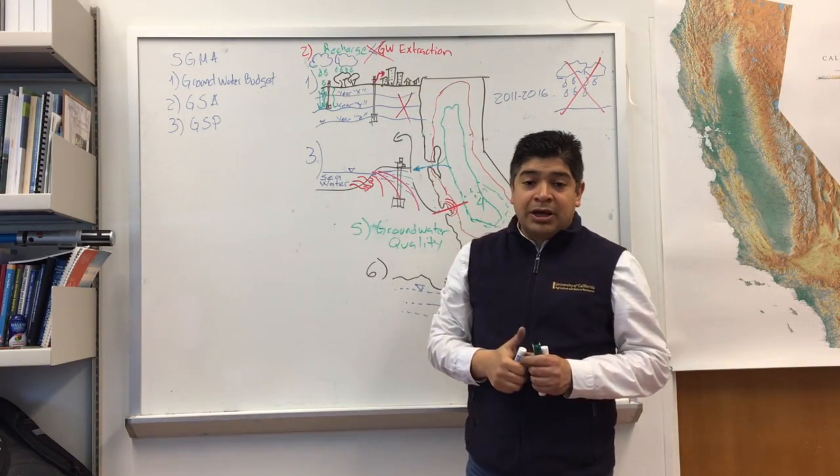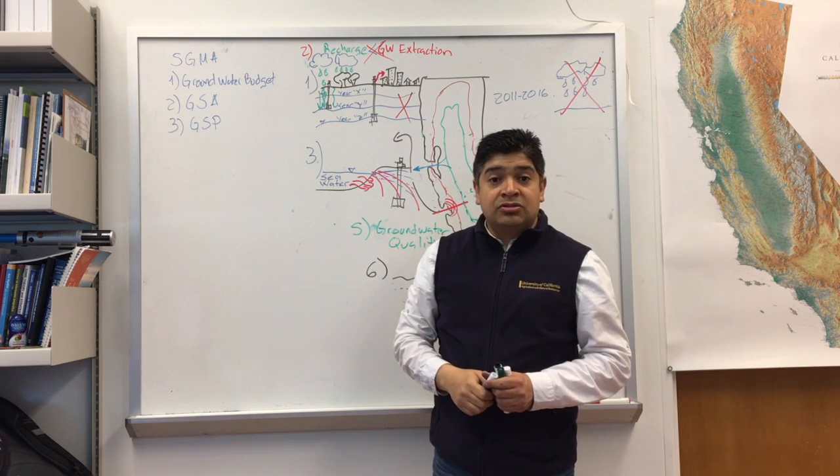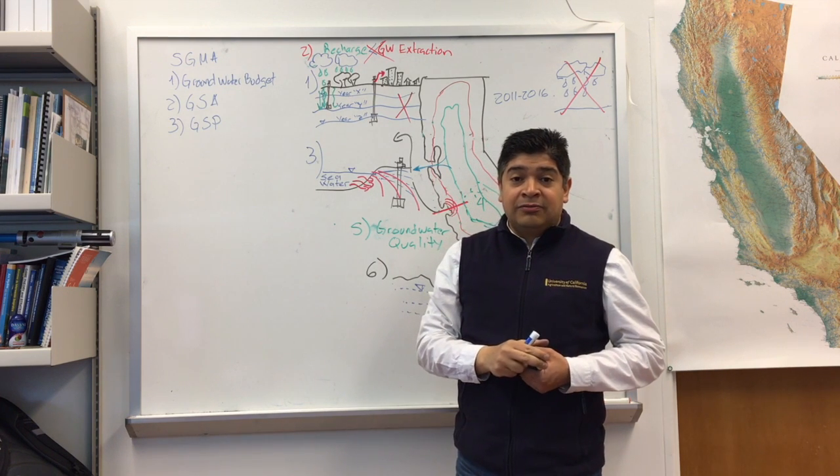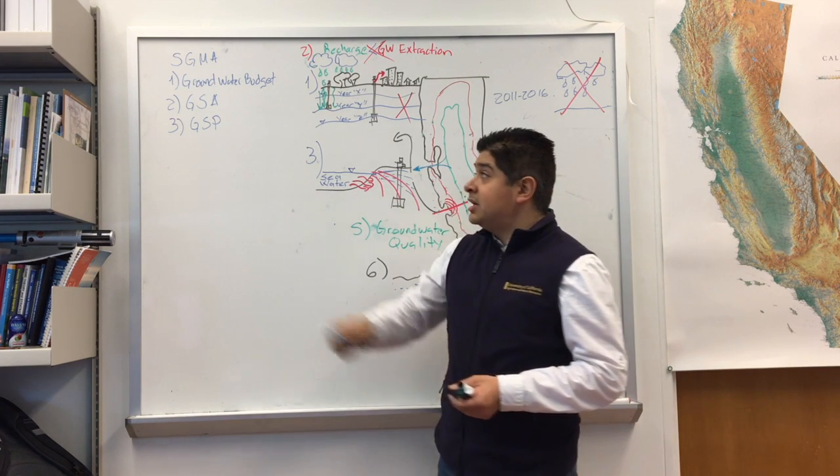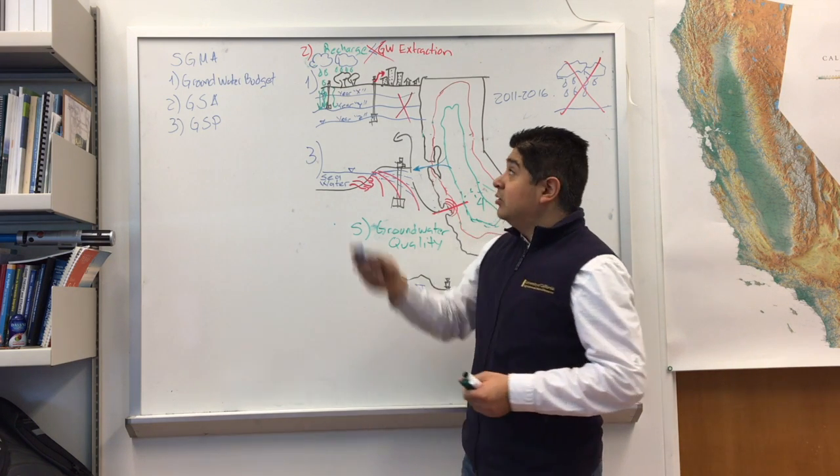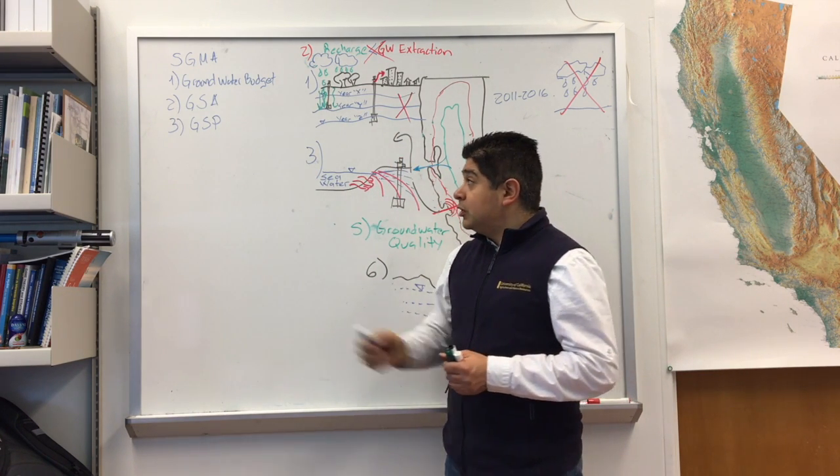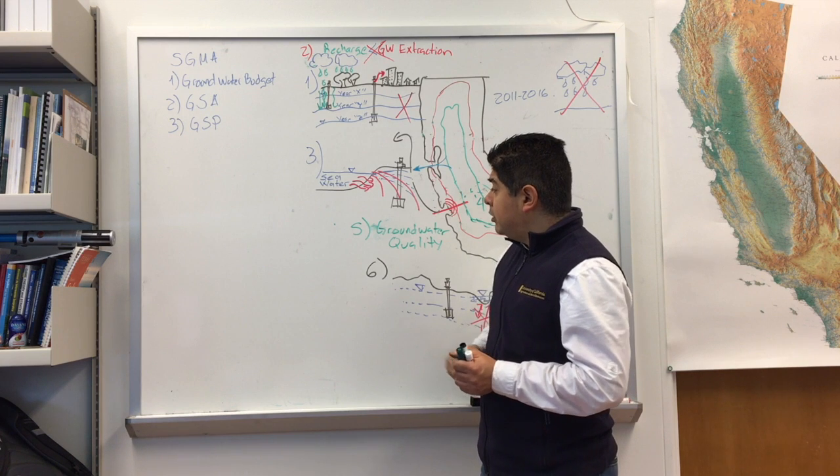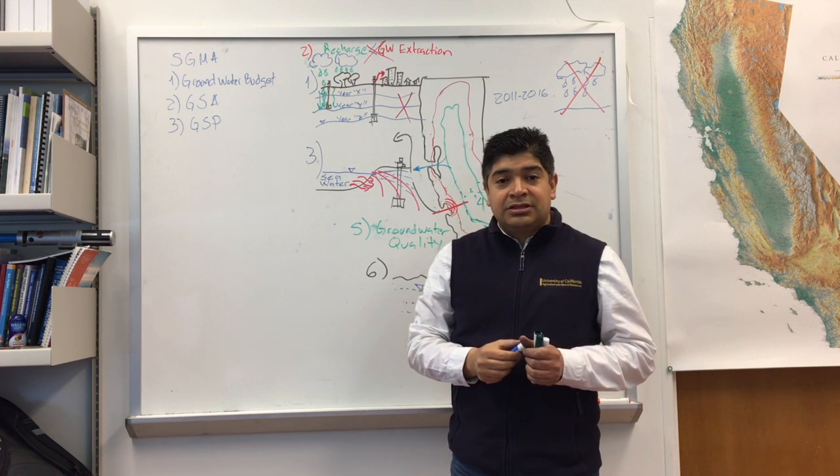So in summary, number one, we have a new legislation, the Sustainable Groundwater Management Act. What this legislation is trying to do is avoid six undesirable results. How is this going to be rolled out for the state of California? Number one, we're going to have a diagnosis that is called a groundwater budget. Number two, an agency, a group of people, will get together to carry out, ideally locally, and to carry out the implementation of the agency. Point number three, this agency will develop a plan to try to avoid and monitor that none of these six undesirable results happen in your groundwater basin. Stay tuned. Thank you.